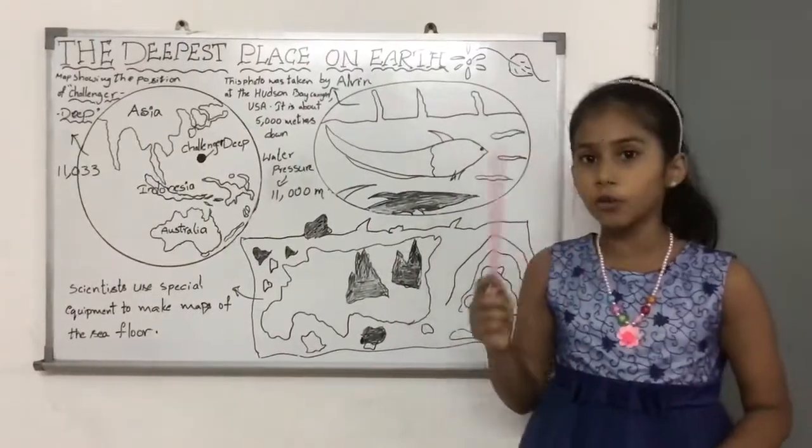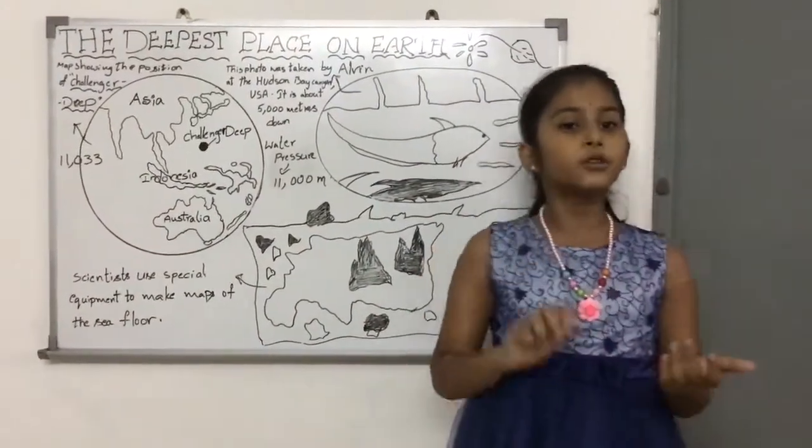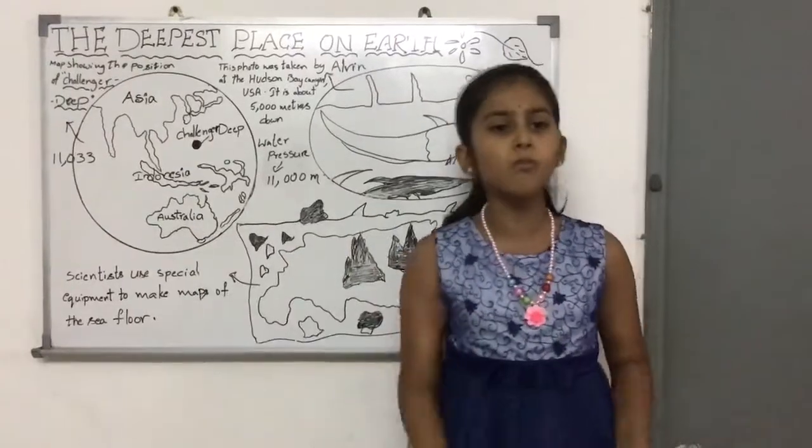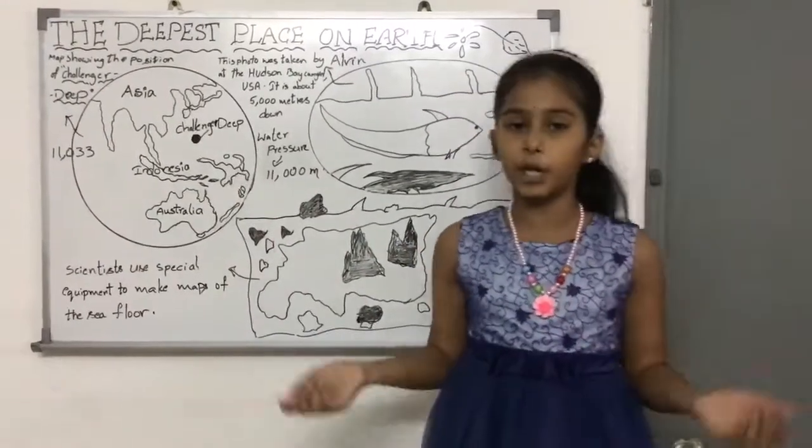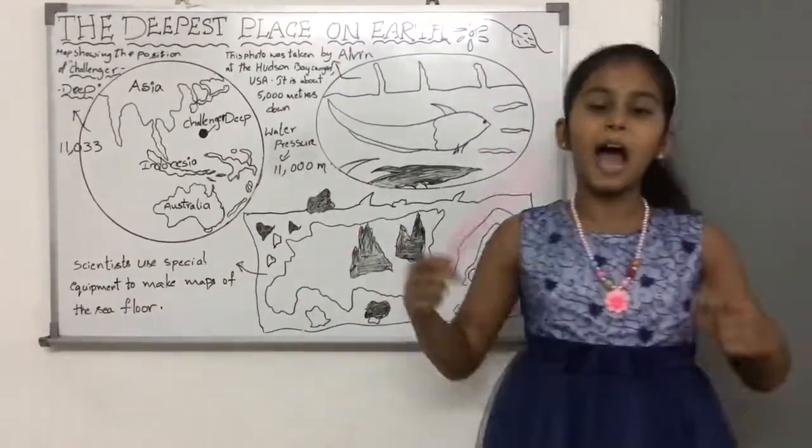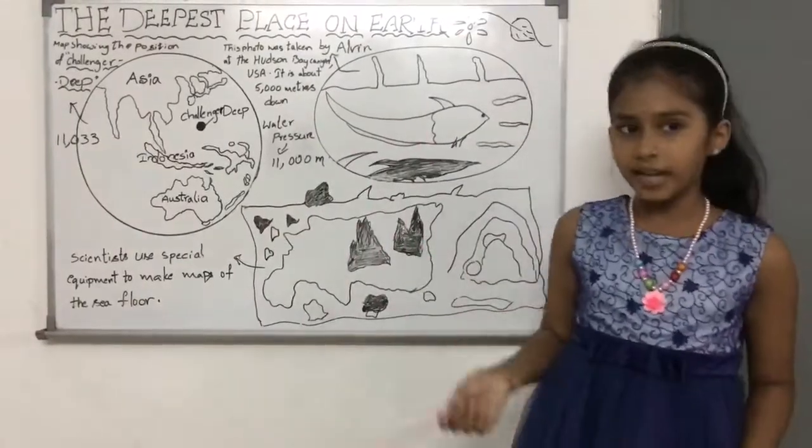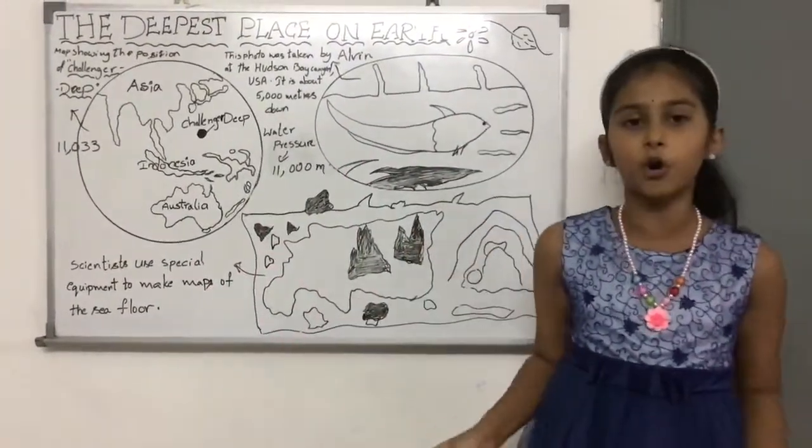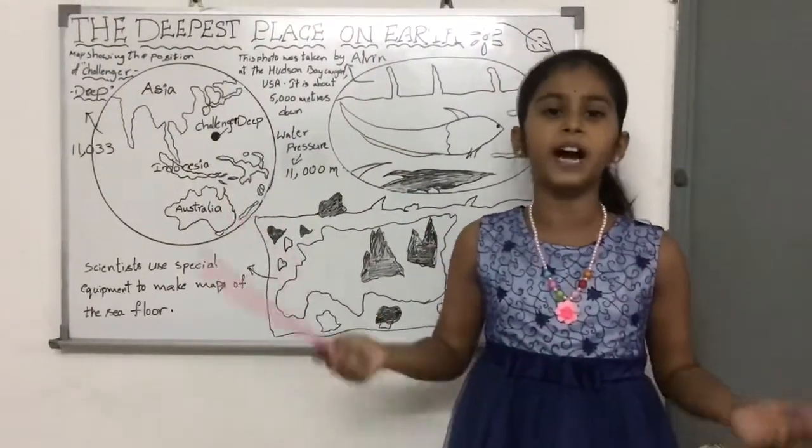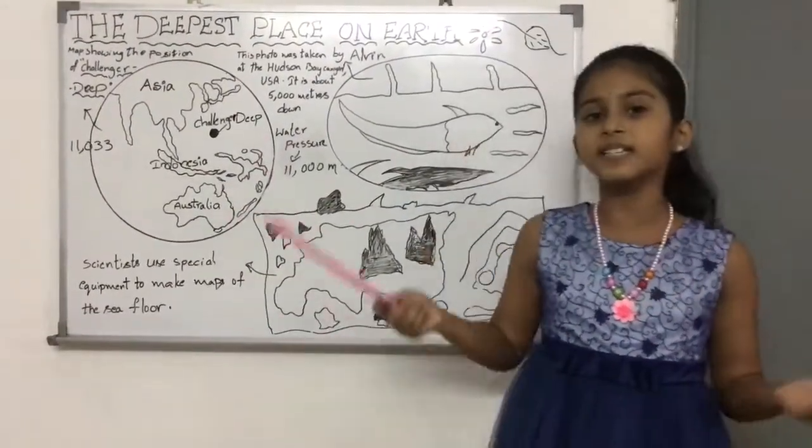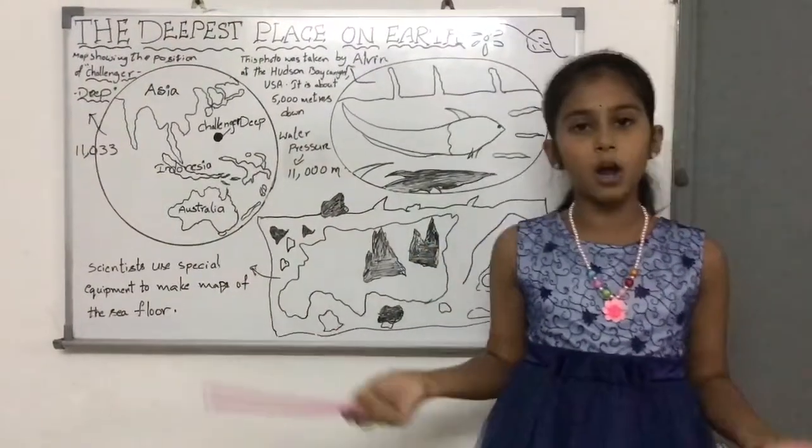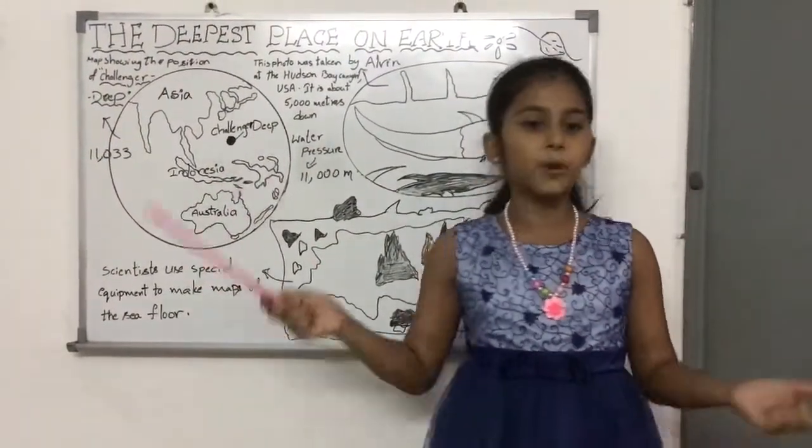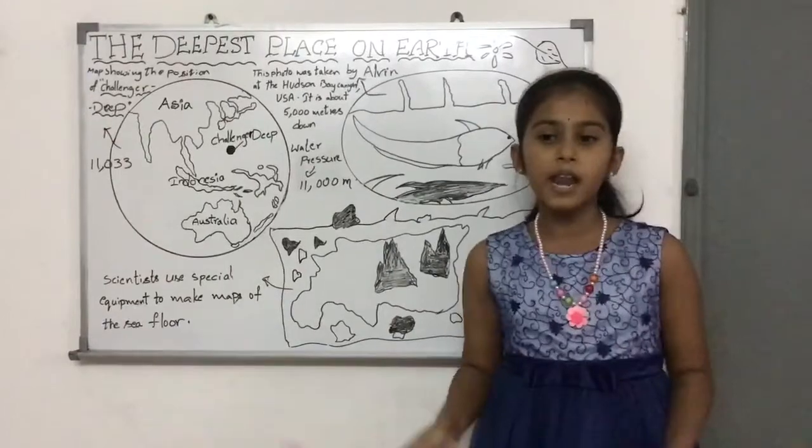Did you also know, today there is no more submersible that can go so deep as Trieste. But today the deepest submarine can only go 4,500 meters. Scientists use this submersible called Alvin to explore the ocean's depths.